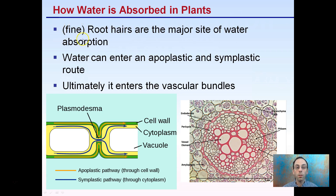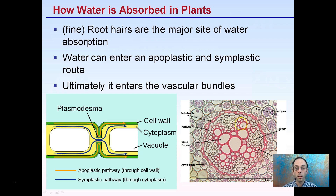Once water gets through these very fine hair-like structures, it can enter either an apoplastic or symplastic route. The apoplastic route is through the cell wall, and there's also the symplastic route, which is through the cytoplasm. Ultimately, regardless of which way the water initially enters, it all gets funneled to and transported through the vascular bundles, which we can see in a microscopic view here. These vascular bundles will ultimately transport the water to the rest of the plant.